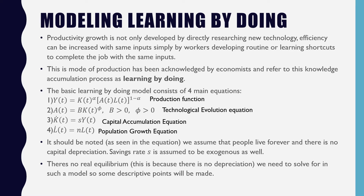The basic learning by doing model consists of four main equations. We have a production function where technology enters in a labor-augmenting way. We have a technological evolution equation where K_T is a function of T minus one (a lag). We have our capital accumulation equation where there is no depreciation, and our population growth equation. People are assumed to live forever, there is no capital depreciation, and the saving rate s is assumed to be exogenous. There is no real equilibrium in this model because there's no depreciation, so we analyze the characteristics the model has.